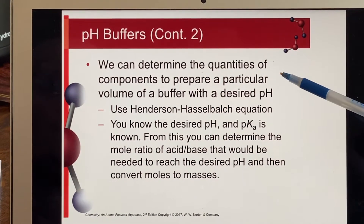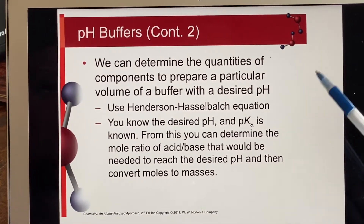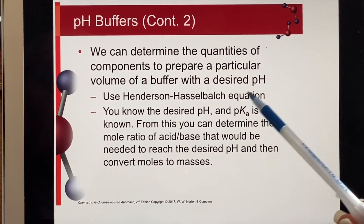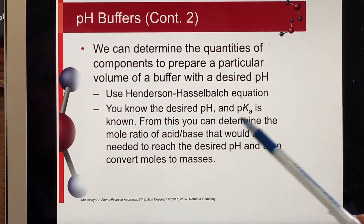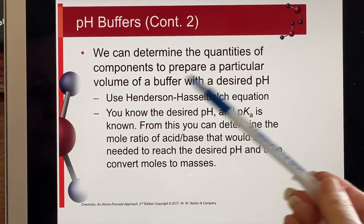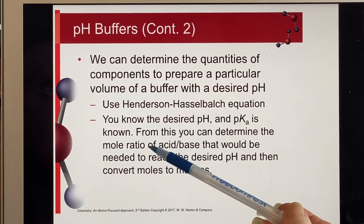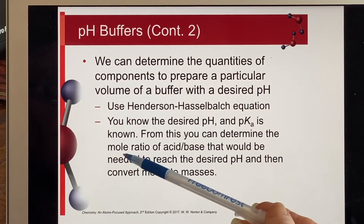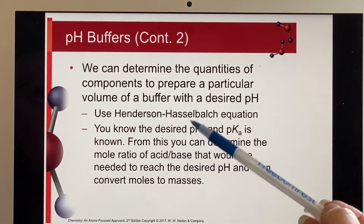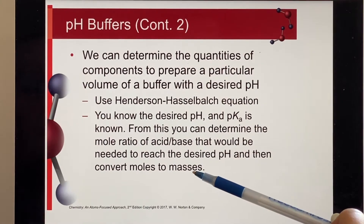We can figure out how much acid and conjugate base to use to make a buffer with a desired pH. We're going to use the Henderson-Hasselbalch equation. You know the desired pH, you know the pKa for that particular acid, and then you can figure out what mole ratio of acid to base is needed to reach the desired pH. Once you have moles, you can figure out the masses. I said mole ratio, not molarity ratio — but because both components are mixed in the same piece of glassware, they have the same volume, so their molarities vary exactly the same way as their mole ratios.